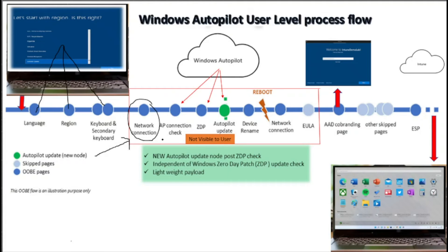After the machine has internet access, it is going to check against Windows Autopilot to see if an autopilot profile is deployed on the device. If it is an autopilot machine, the machine downloads the autopilot profile, and at the same time also downloads the zero-day patch as well as any autopilot updates available for that machine. The machine installs those updates, configures the out-of-box experience as per the deployment profile, and if a specific naming convention is configured, renames the device accordingly — then goes for a reboot.